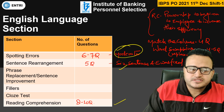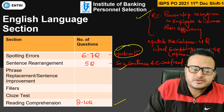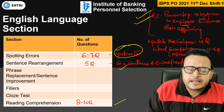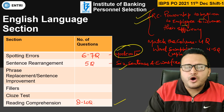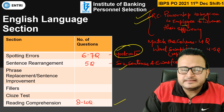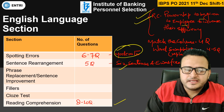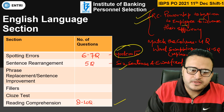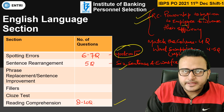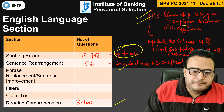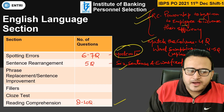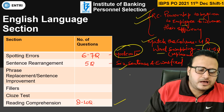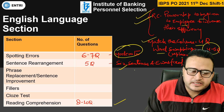Reading comprehension had 8 to 10 questions and the theme was very interesting — it was about giving power naps to employees and how we can increase employee efficiency through power naps. Match the column had 4 questions. Word swapping or word replacement had 4 to 5 questions. This is how the 30 questions of the English section were formed.